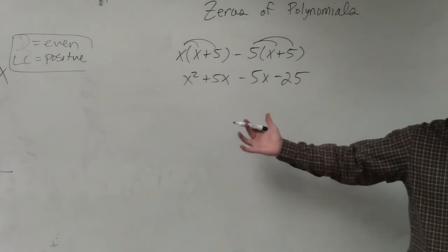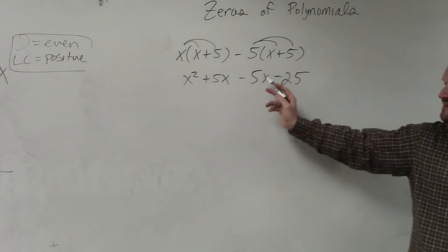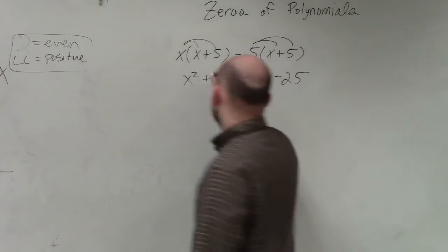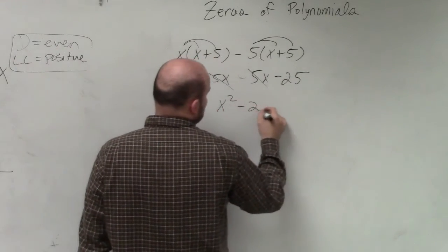Then in this case, I want to combine my like terms. I have a positive 5x and a negative 5x. So those are going to add to 0, leaving me with x squared minus 25.